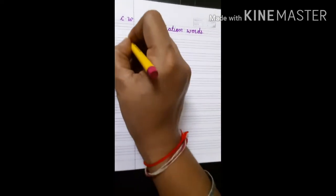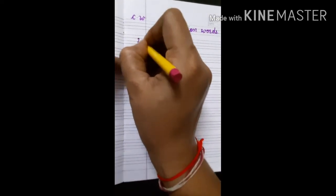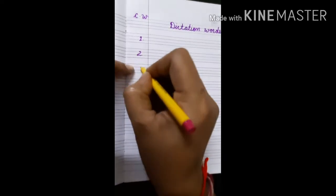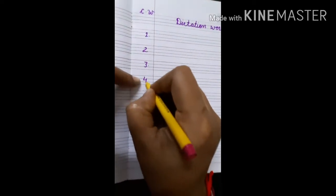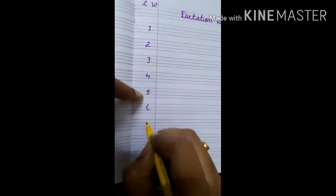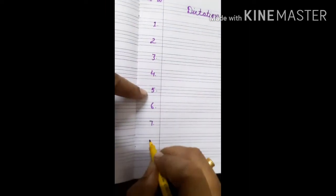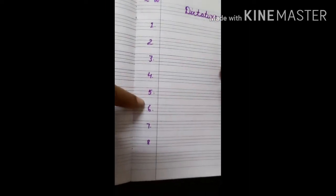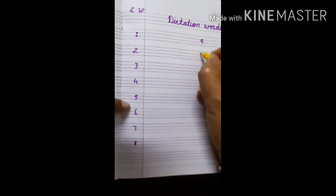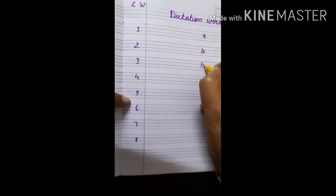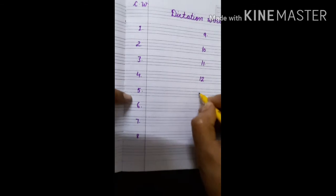Start writing counting, write carefully. Write counting: 1, 2, 3, 4, 5, 6, 7, 8, 9, 10, 11, 12, 13, 14, and 15.